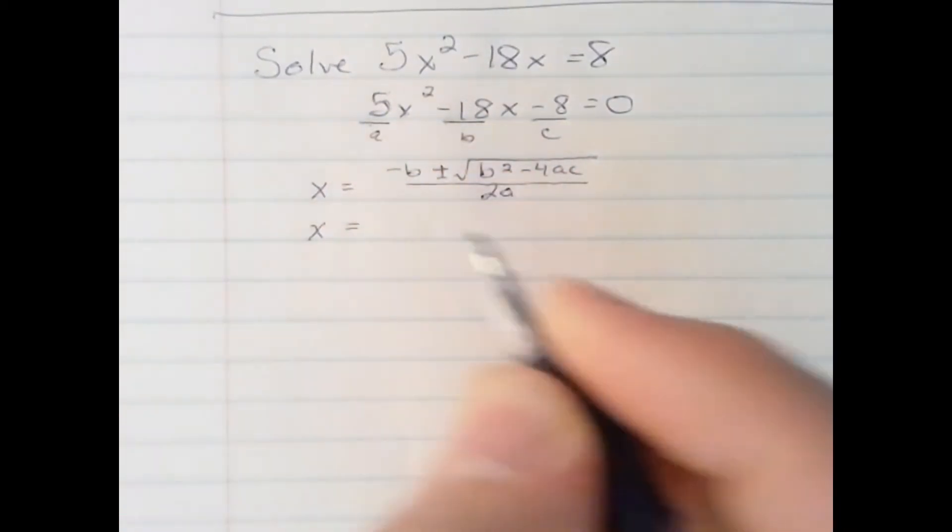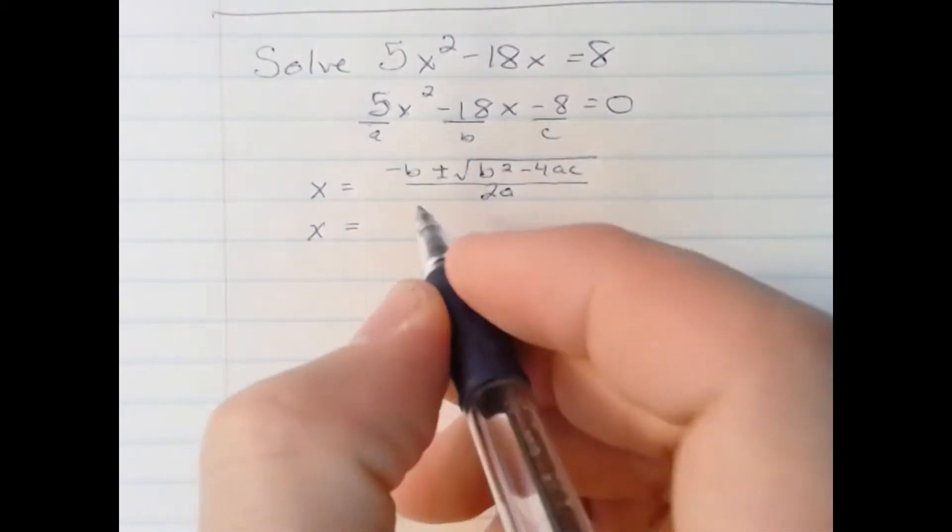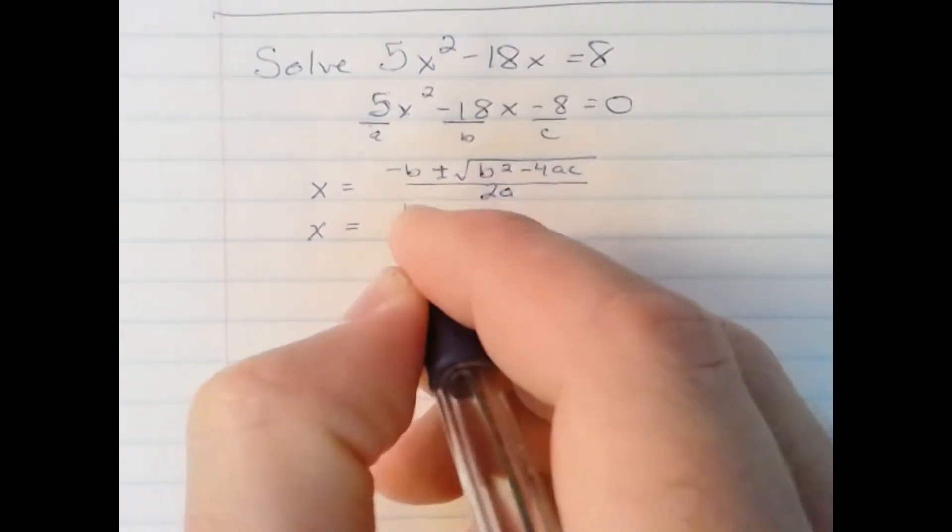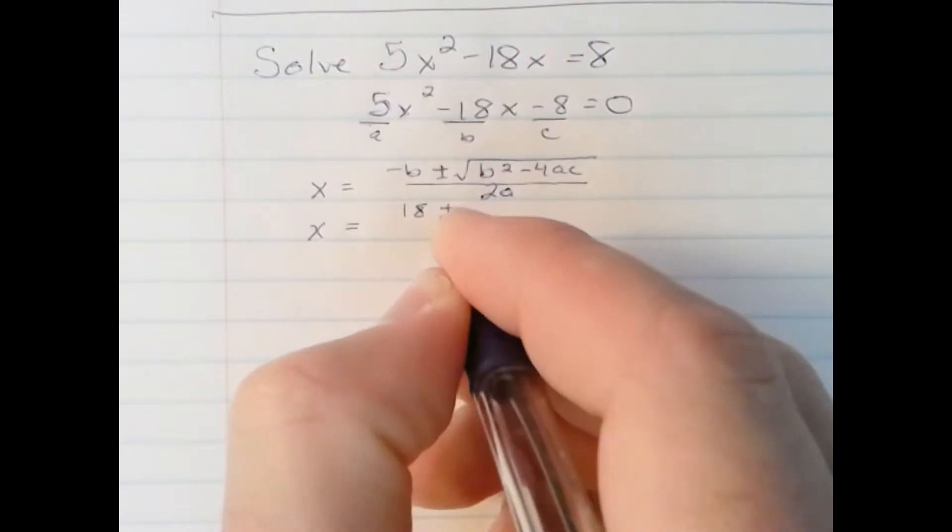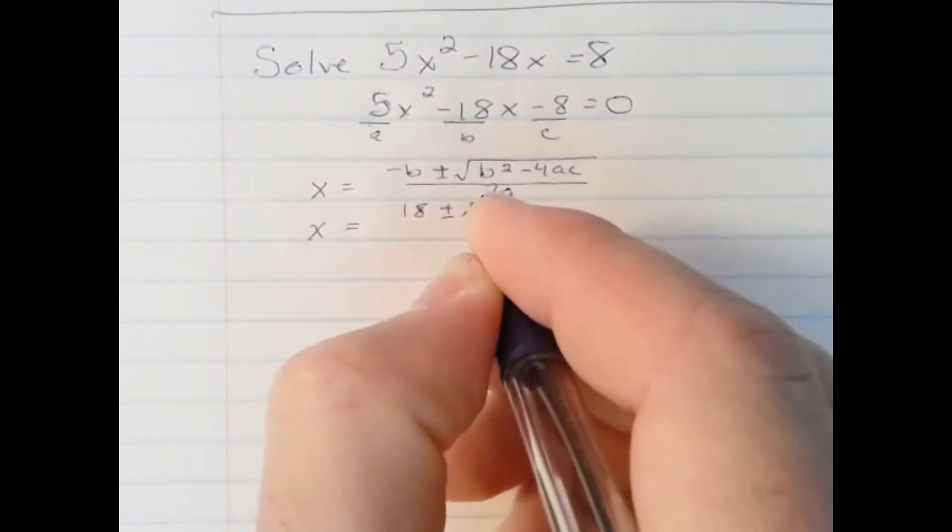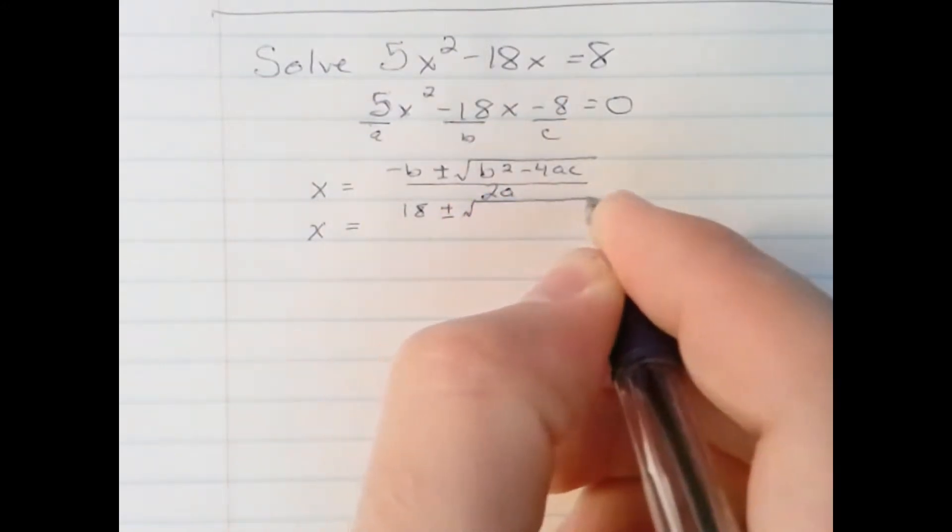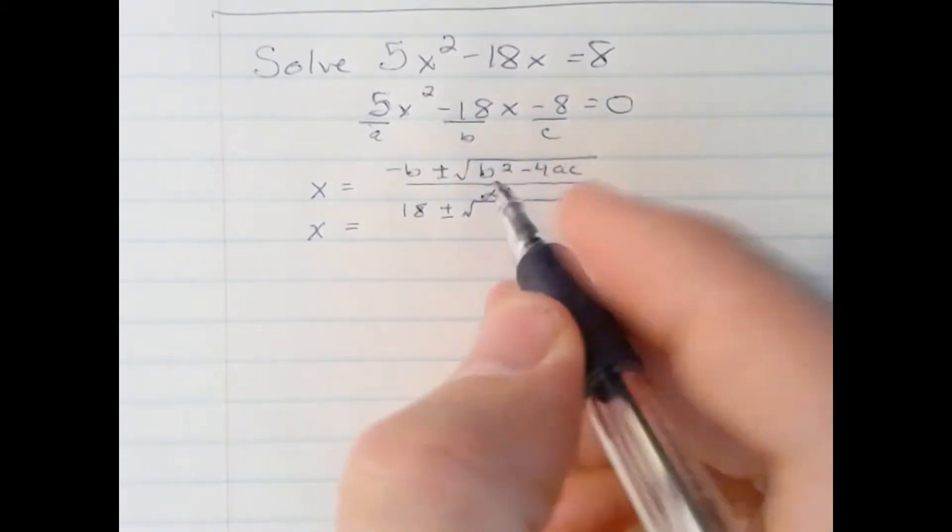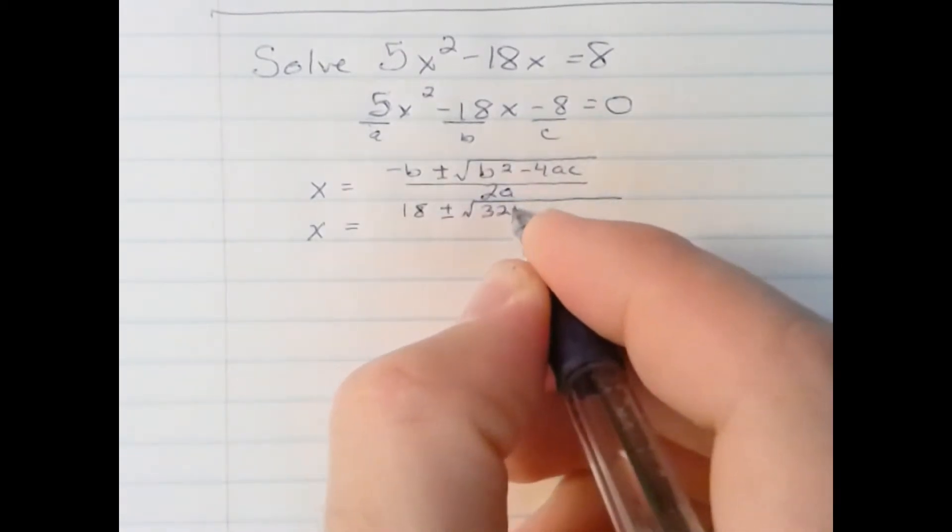I'm going to rewrite what I just wrote, but I'll put in the numbers in the appropriate place. Negative b would be positive 18. b squared is negative 18 squared, which gives us a positive 324.